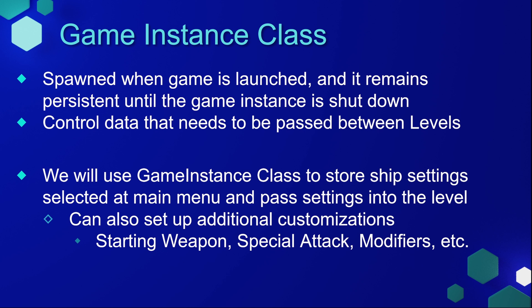When you launch a game, the Game Instance Class is spawned and then remains until you close that instance of the game down. In a multiplayer game, each client has their own game instance. And because it remains persistent even when you change between levels, it's commonly used to control data that needs to be passed between levels.